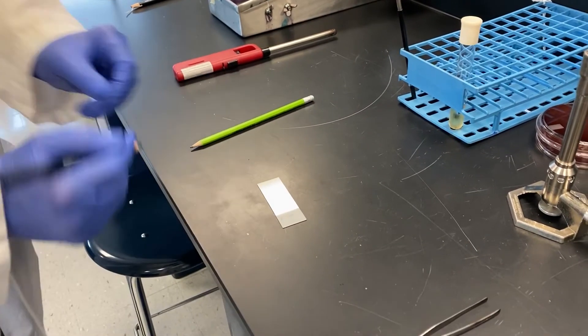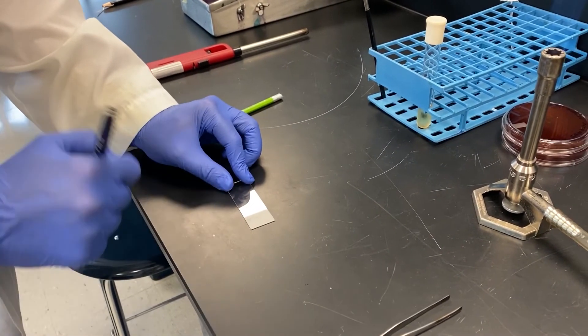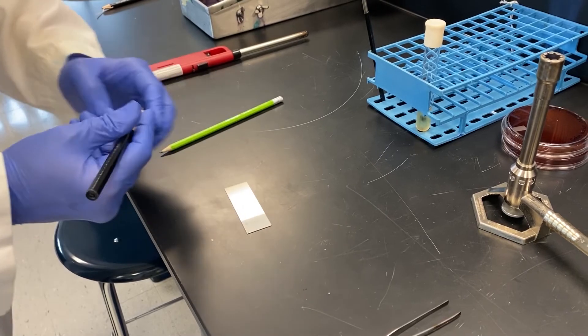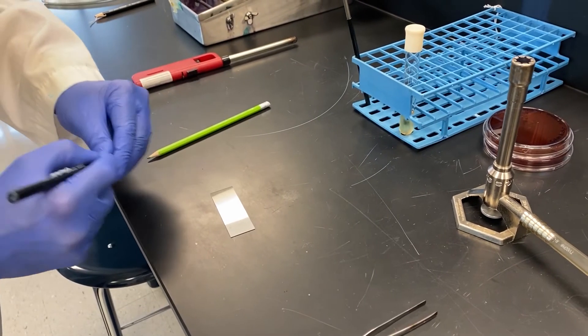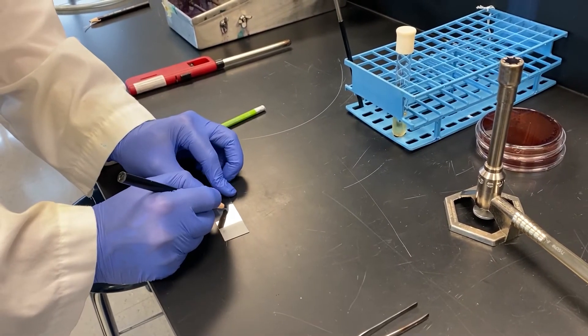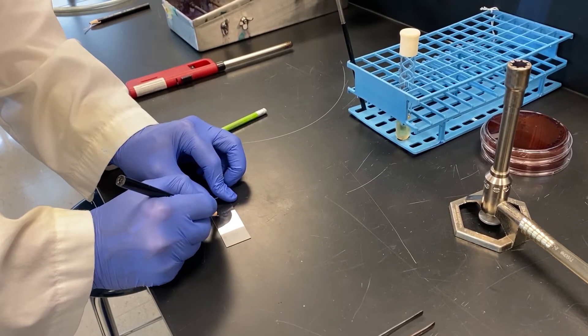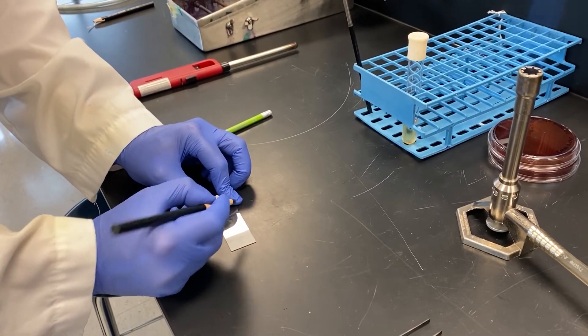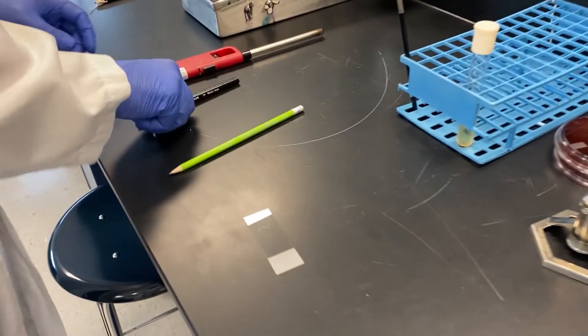When preparing a smear from a broth culture it's easy to lose your culture on the slide. It helps if you use a wax pencil and draw a circle around where you will actually place your culture. This will help you when you go to look at your culture under the microscope.